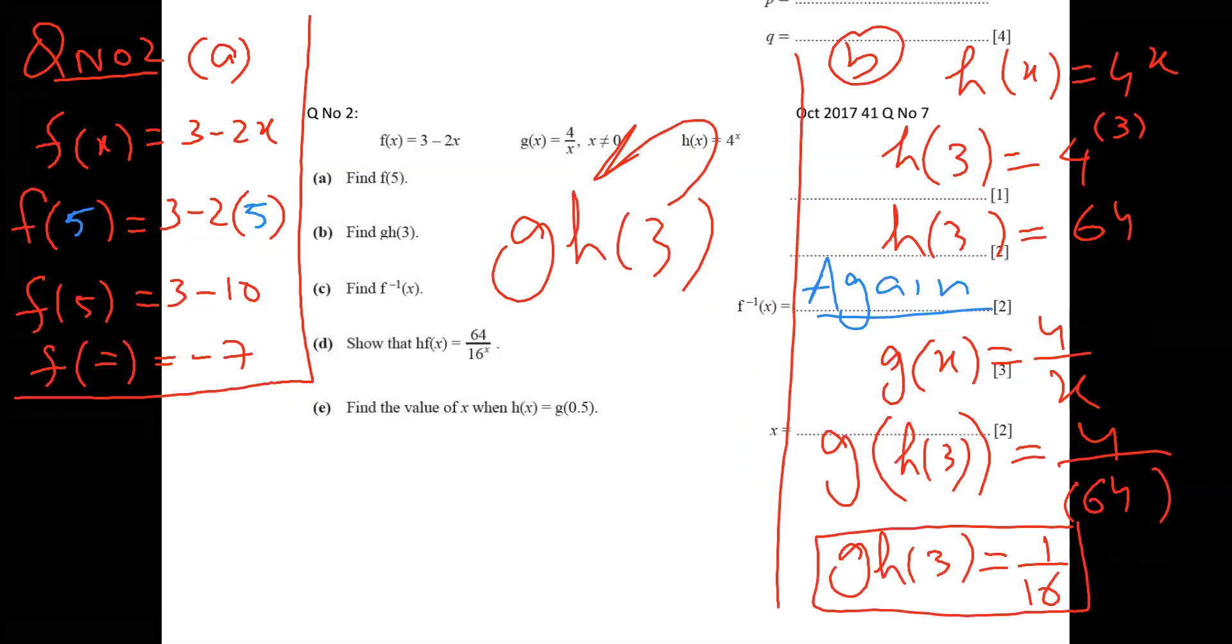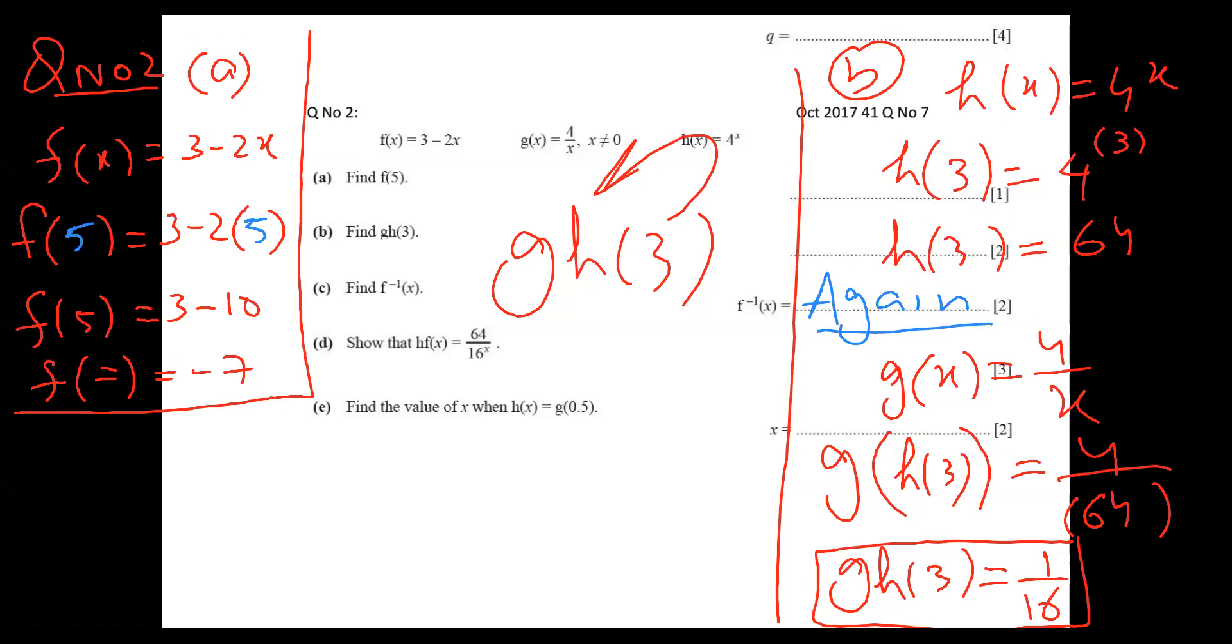So let's go for the C part. C part is what? F inverse of X. Now I'm going to do F inverse part here. So gradually I'm doing here. F of X is what? C part, F of X is given here, three minus two X. So now what to do? I have to take inverse and first of all, remove function name and write Y here.